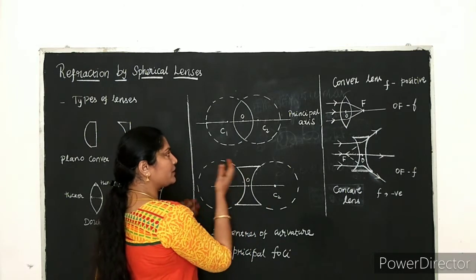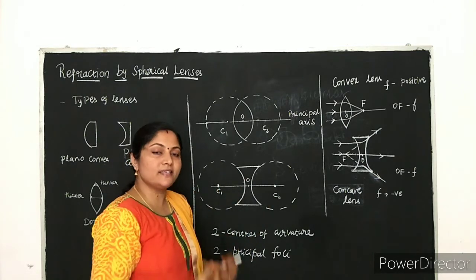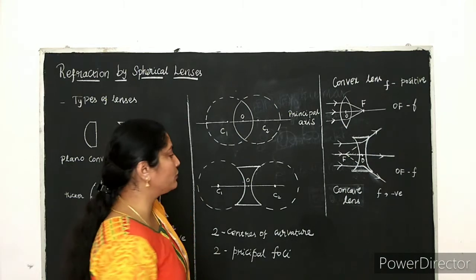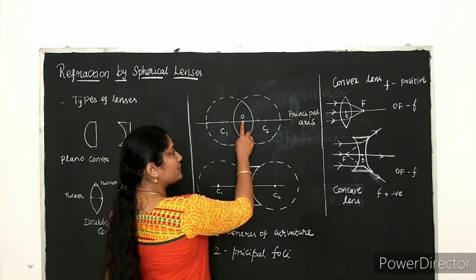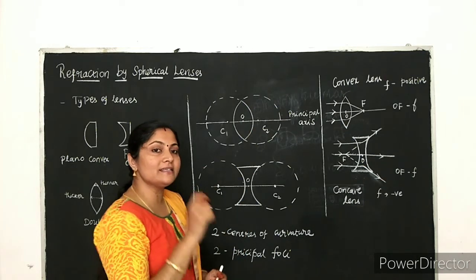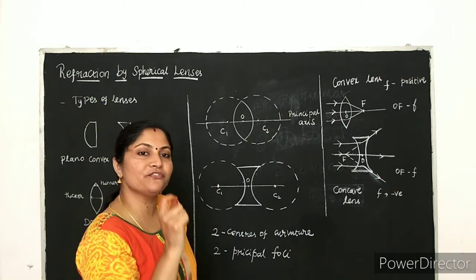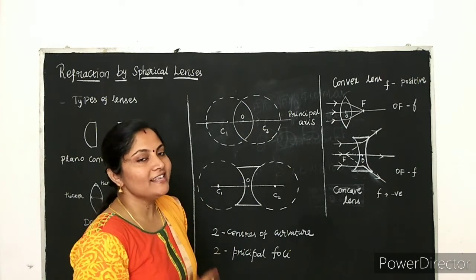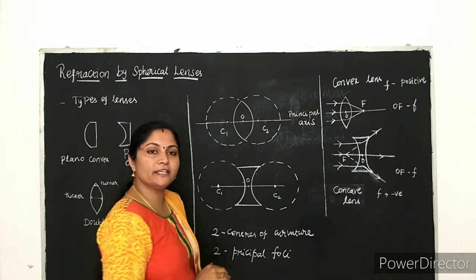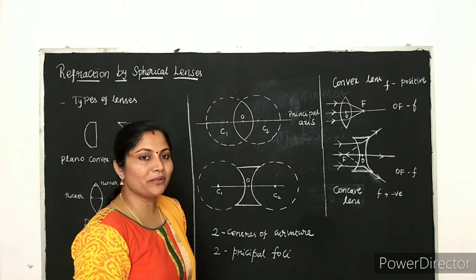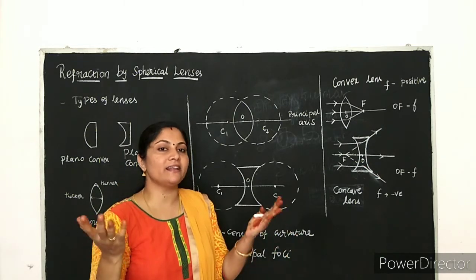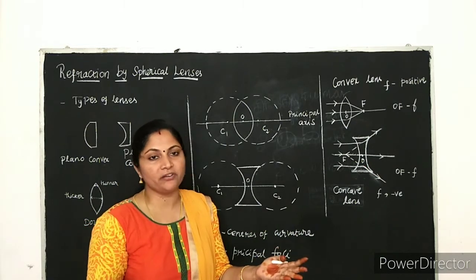In the sphere, there is one center of curvature. For a lens, there are two centers of curvature: C1 and C2. C1 is on the left side and C2 is on the right side. The central point of the lens — the optical center — is denoted by the letter O.